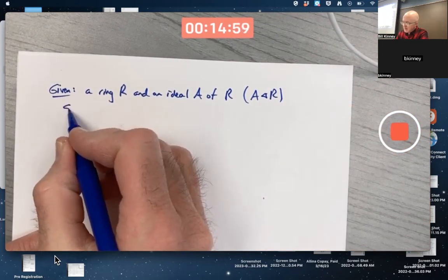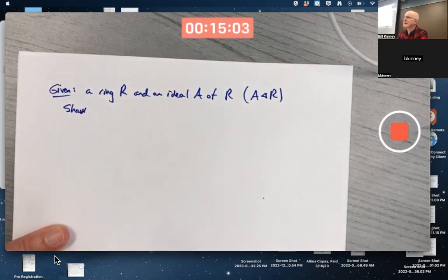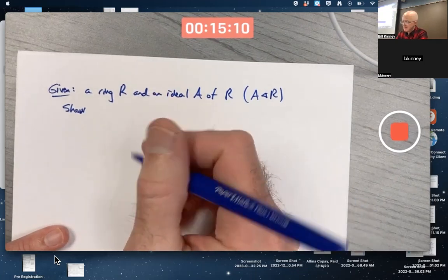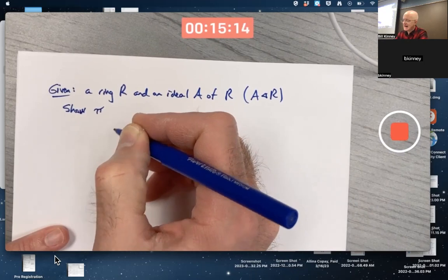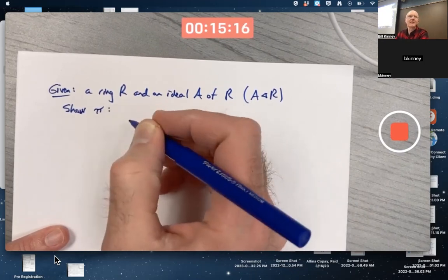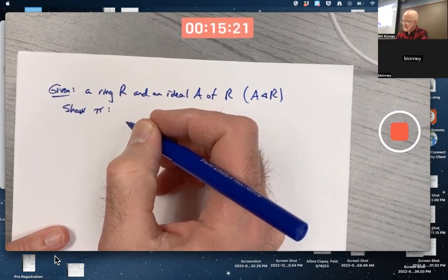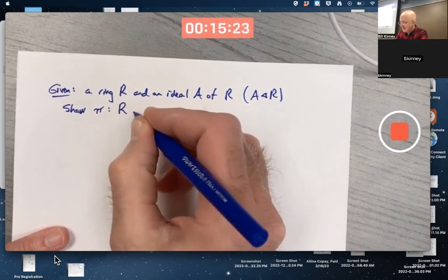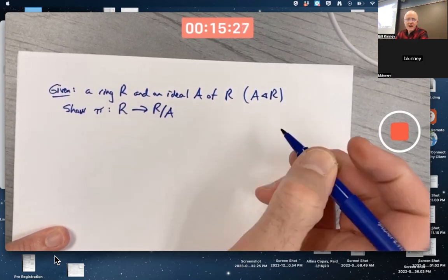We want to show that the mapping, now if you look back at the corresponding theorem in chapter 10 about group homomorphisms, the book calls this mapping gamma. But I was always told to call it pi, not because it's the number pi, but because pi starts with P and P also is the first letter in the word projection.